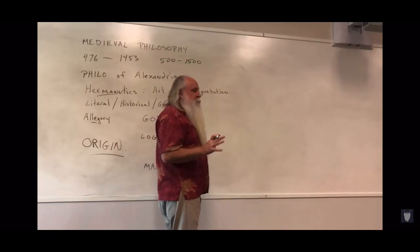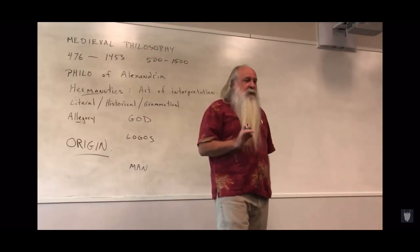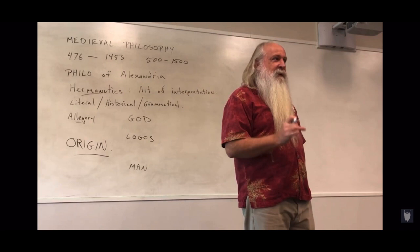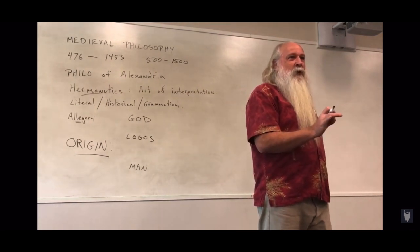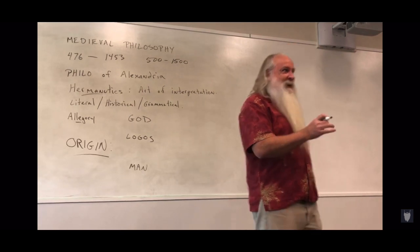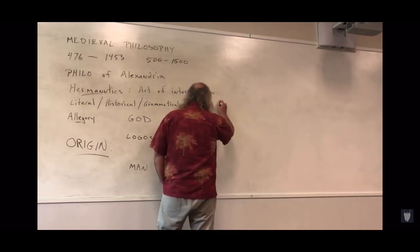With allegorical interpretation, though, it treats the scriptures kind of like an onion. The scriptures become either like an onion, or an ogre, or a parfait, because they have lots and lots of layers.